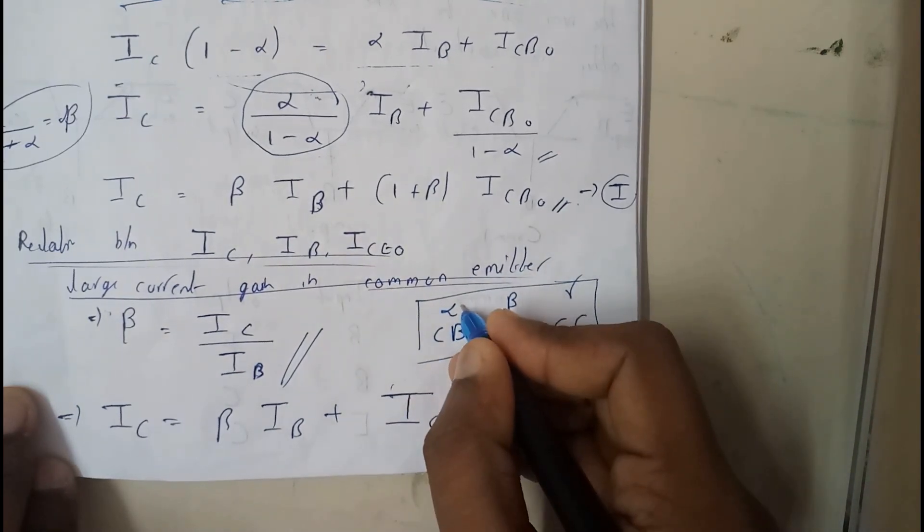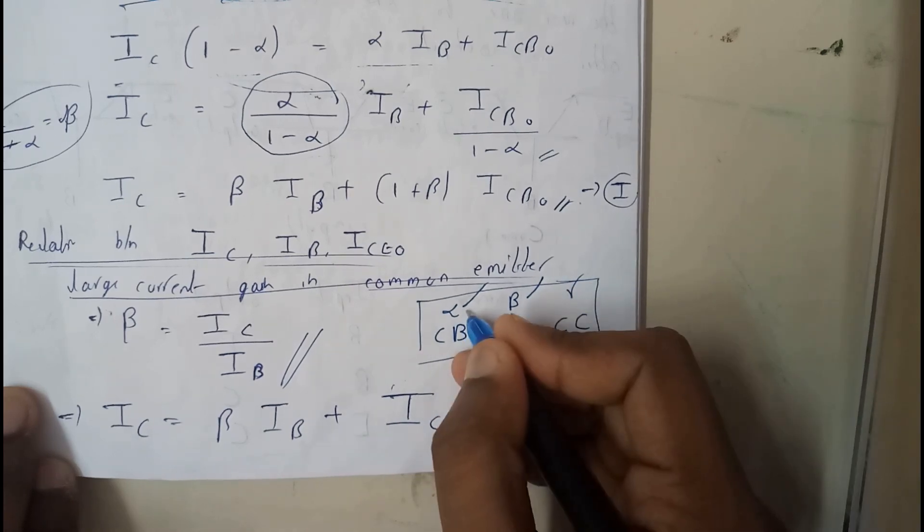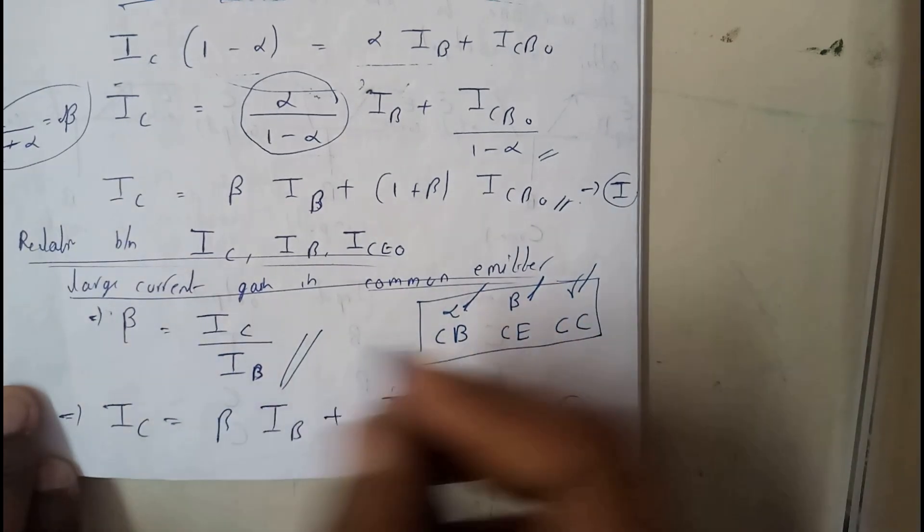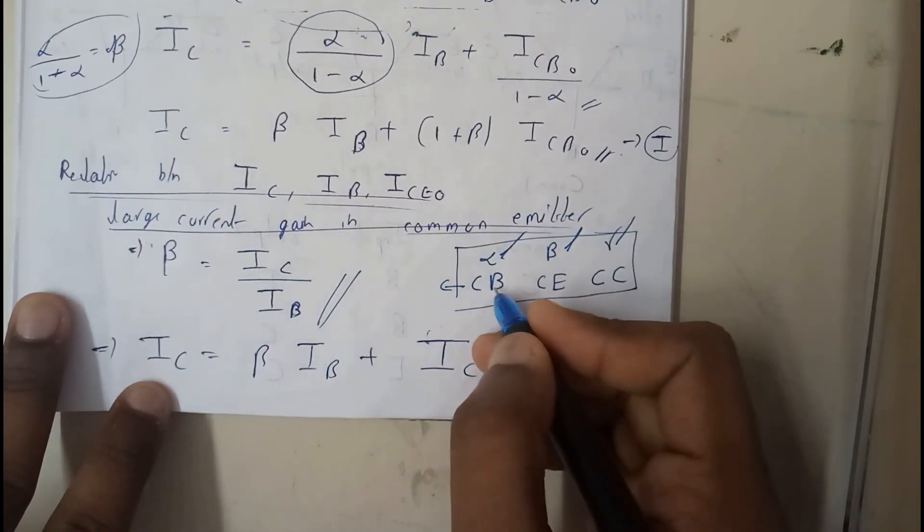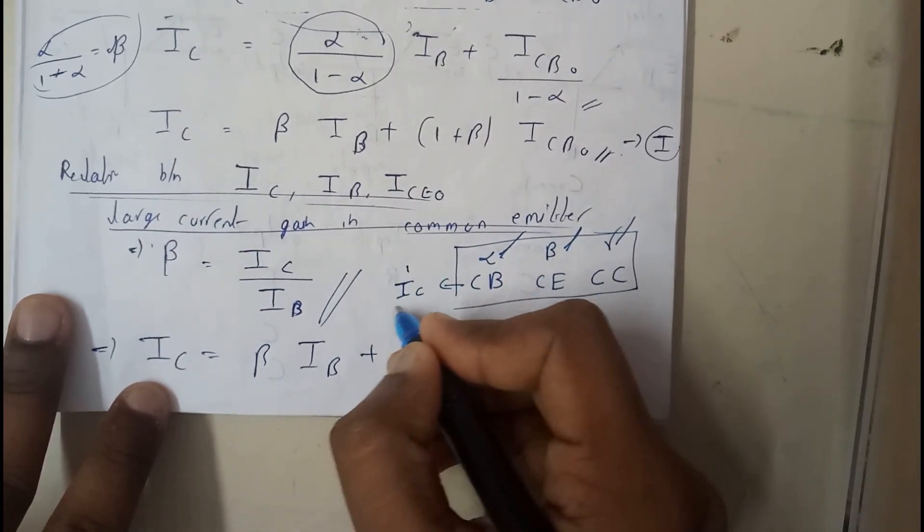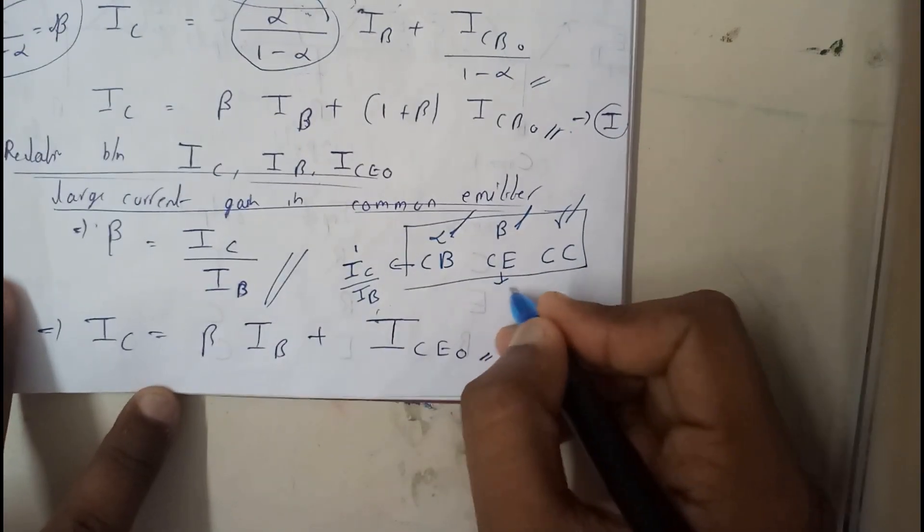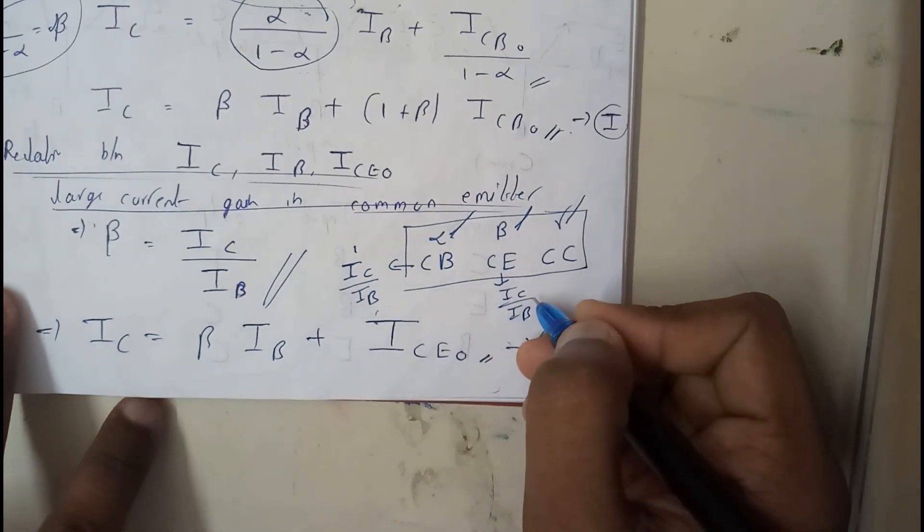Beta is for common emitter and gamma is for common collector. These will be the large signal gain of common base, large signal gain of common emitter, large signal gain of common collector. So basically for common base it is nothing but base will be common, so emitter will be input and collector will be the output. For this it is IC by IB as emitter is common.